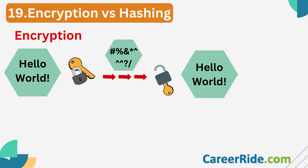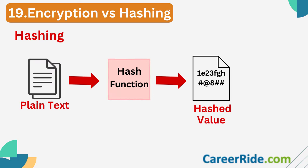Question nineteen: What is the difference between hashing and encryption? Encryption is the practice of scrambling information in a way that only someone with a corresponding key can unscramble and read it — it is a two-way function. When you encrypt something, you do so with the intention of decrypting it later. Hashing, on the other hand, is the practice of using an algorithm to map data of any size to a fixed length — this is called a hash value, hash code, or hash sum. While encryption is a two-way function, hashing is a one-way function.